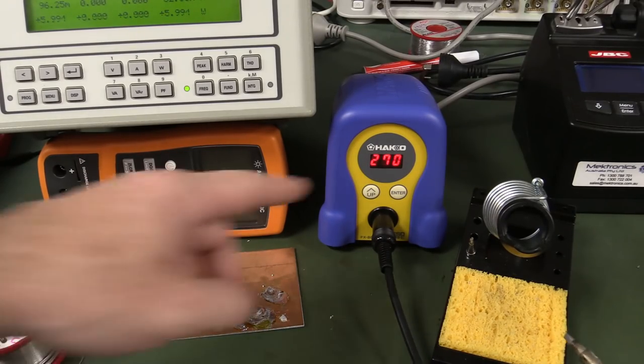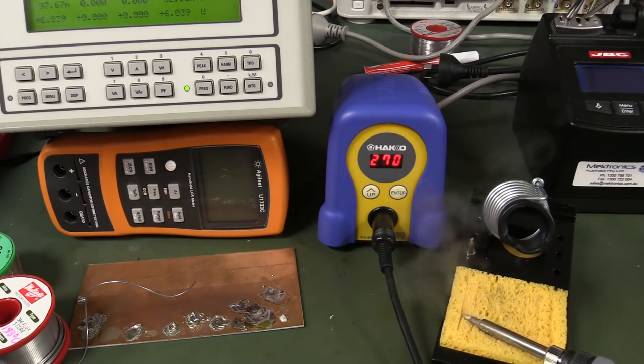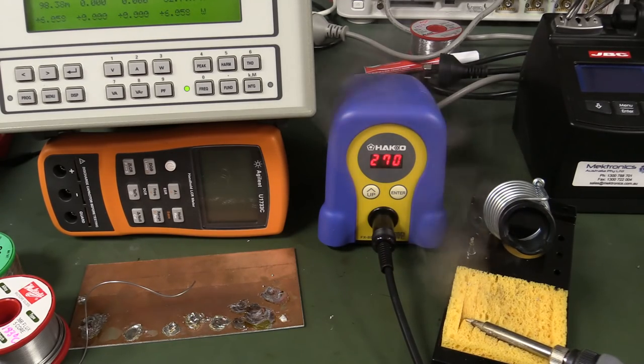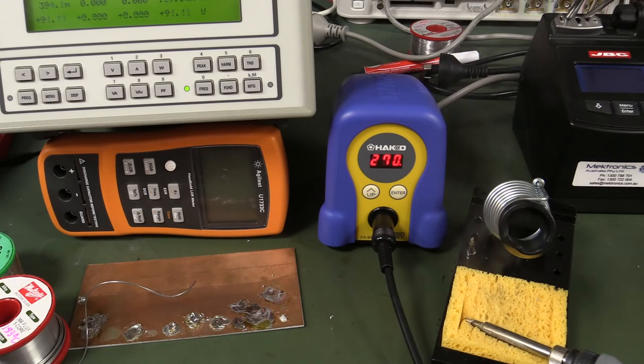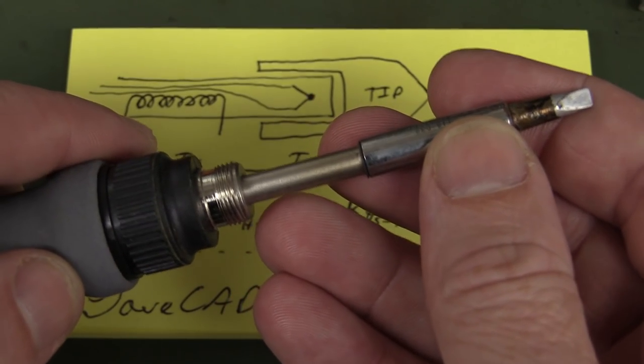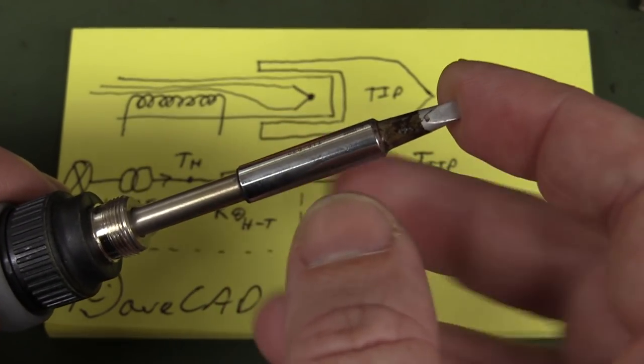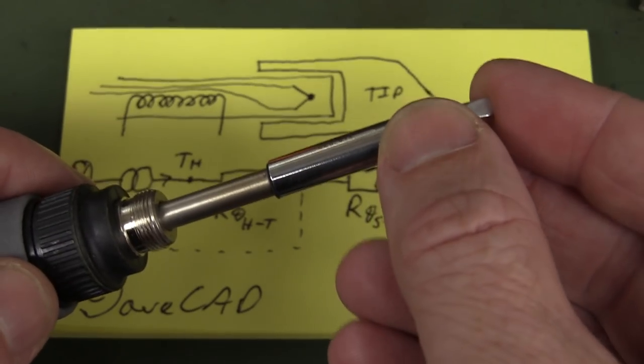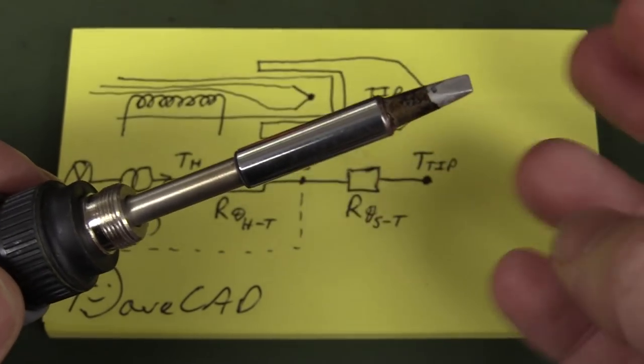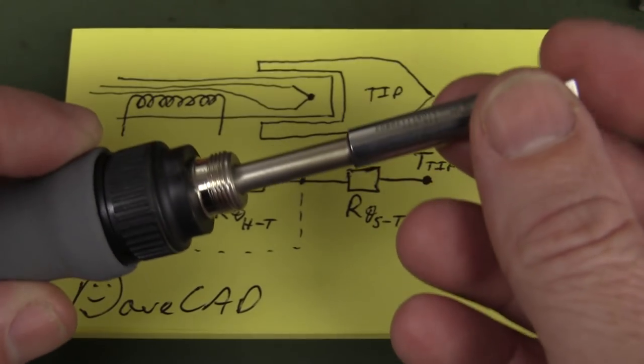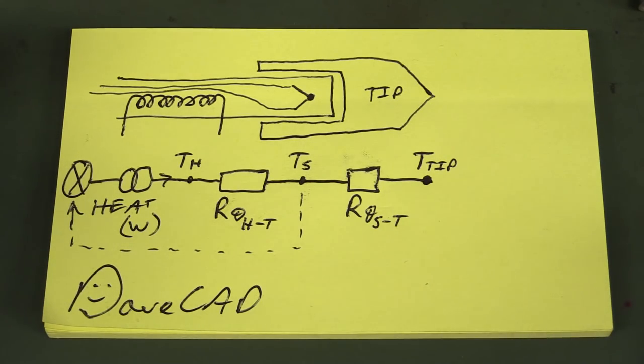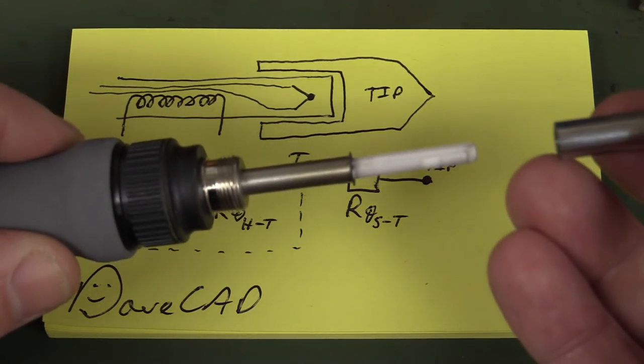And you can kinda get the Heiko to switch on all the time if you really sponge it. Kind of, it stays on most of the time, the majority of the time, drawing 90 odd watts there. So what's actually going on here? Why is this Heiko iron not delivering continuous power to the tip here when it's clearly sucking all the heat out of it? Well, this can be explained on a DaveCAD drawing here. So let's take a look at it.